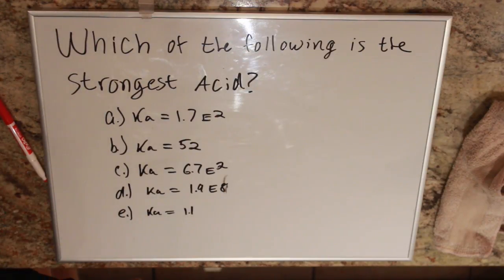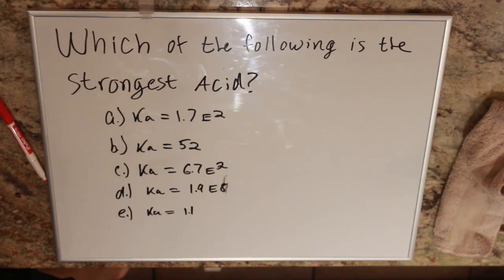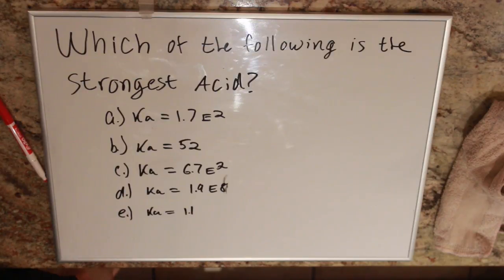Our question is: which of the following is the strongest acid? We have A with Ka = 1.7×10², B with Ka = 52, C with Ka = 6.7×10², D with Ka = 1.9×10⁸, and E with Ka = 1.1.